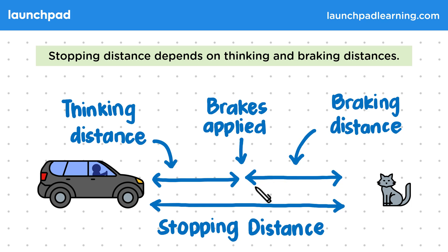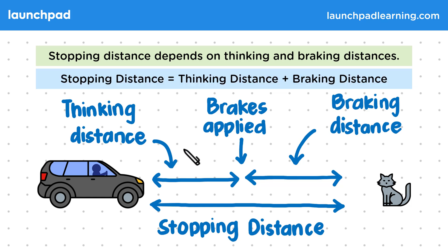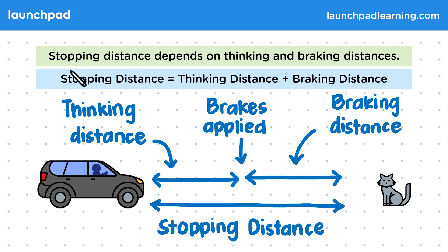From this diagram, we can see that putting these two distances together gives us the same as the overall stopping distance. This is because the stopping distance is equal to the thinking distance plus the braking distance. All three terms have the same units of distance, usually metres.